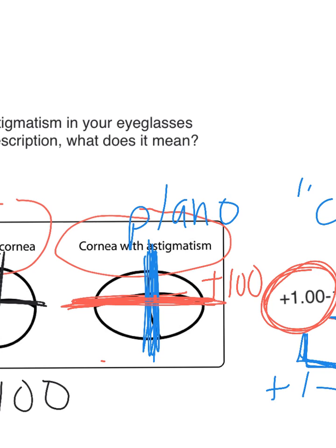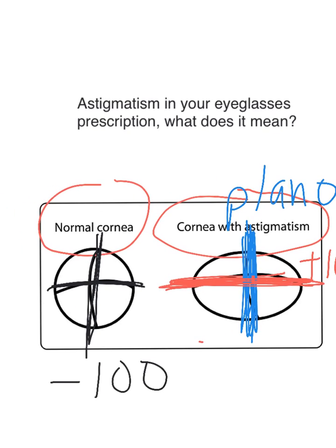If you look back at the normal cornea, because the meridians are all the same, all these meridians have the same power — all of these meridians are minus one.